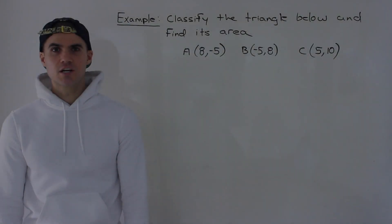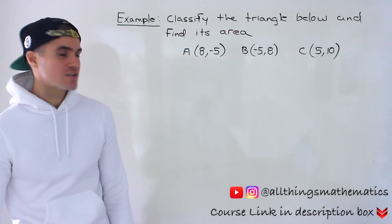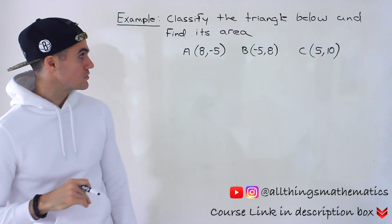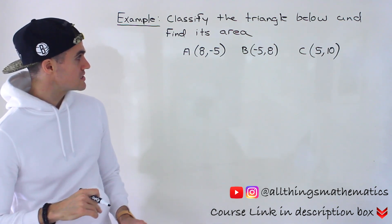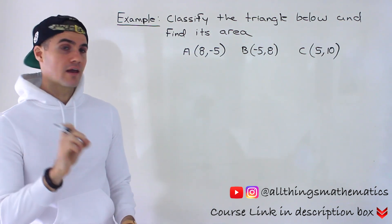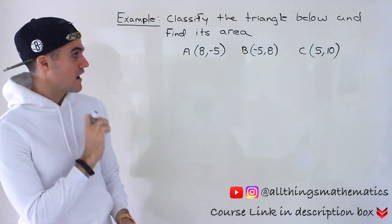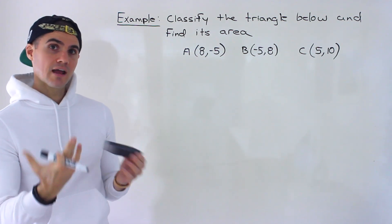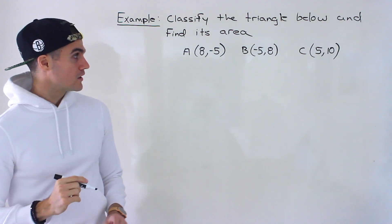What's up everyone? Patrick here. Welcome back. Moving on to another question dealing with classifying triangles. So we are given this triangle here with the vertices 8, negative 5, then negative 5 and 8, and then 5 and 10. And we have to classify it and then find the area.